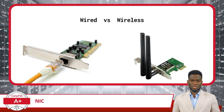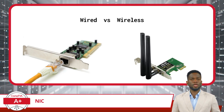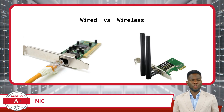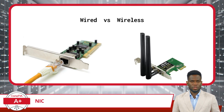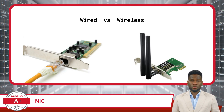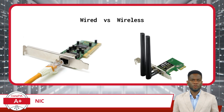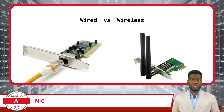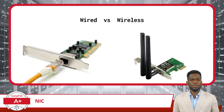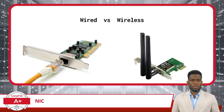These technologies enable devices to connect to networks without the need for physical cabling, offering greater flexibility and mobility. While wireless NICs provide the convenience of untethered access, they may face challenges such as signal interference, varying signal strength, and potentially lower data transfer rates compared to wired connections. They are ideal for devices where mobility is essential, such as laptops, smartphones, and tablets, and in environments where running cables is impractical or impossible.